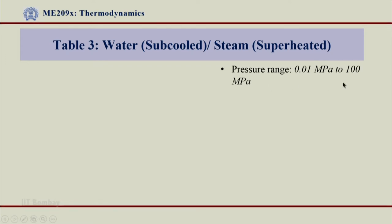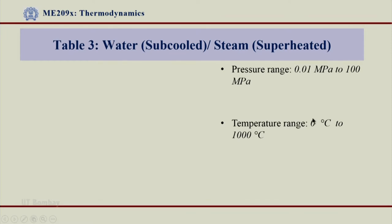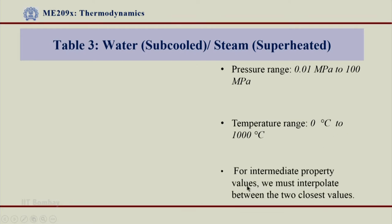For each of these pressures, the temperature ranges from 0°C to 1000°C. You can see how exhaustive the data in the steam tables is — for all these respective pressures and temperatures, we have all the property data of water. Some increments are given with respect to pressures and temperatures, and for intermediate property values we must interpolate between the two closest values, which is a valid approximation we have been using for Table 1 and Table 2 as well.